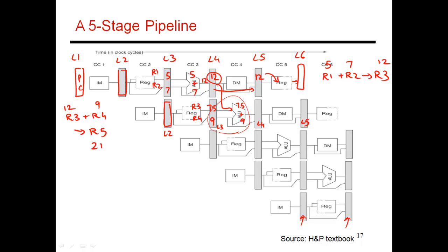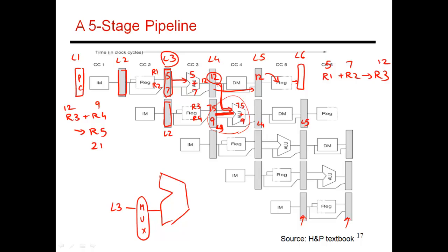Let me amplify what is going on. I have my ALU, which gets its input from the previous stage. I'm now introducing options: I can allow the ALU to get its input either from the stale value 75 or from the correct value 12. So I'm introducing a multiplexer that can pick from multiple locations — one input coming from latch L3 (the stale 75) and another from latch L4 (the correct 12).